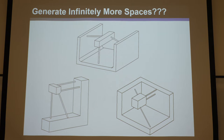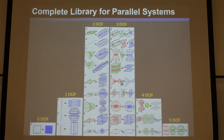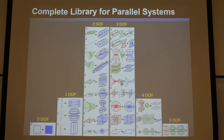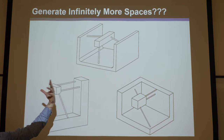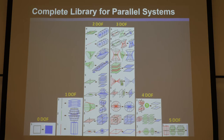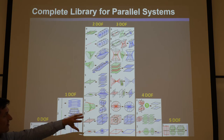Here's the coolest thing: even though there's an infinite number of examples that you'd think could generate an infinite number of freedom and constraint spaces, there's just a finite number of freedom and constraint spaces. They're all within this chart — this library is the FACT library, the Freedom and Constraint Topologies library. It contains all freedom and constraint spaces for parallel systems. This is just true for parallel systems, but there's another one for serial and hybrid systems you'll learn shortly. This is the complete comprehensive FACT library of all freedom and constraint spaces.